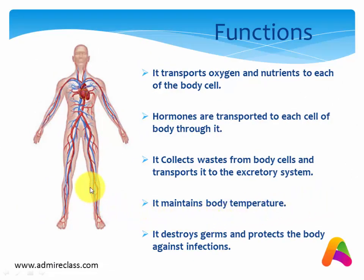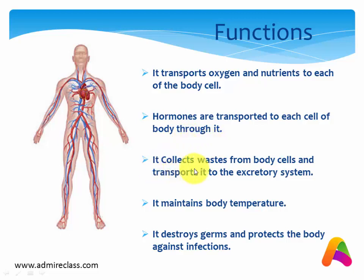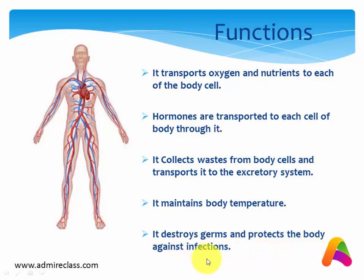Now, what are the functions of the circulatory system? It transports oxygen and nutrients to each of the body's cells. Hormones are transported to each cell of the body through it. It collects wastes from body cells and transports it to the excretory system. It also maintains body temperature and destroys germs, protecting the body against infections.